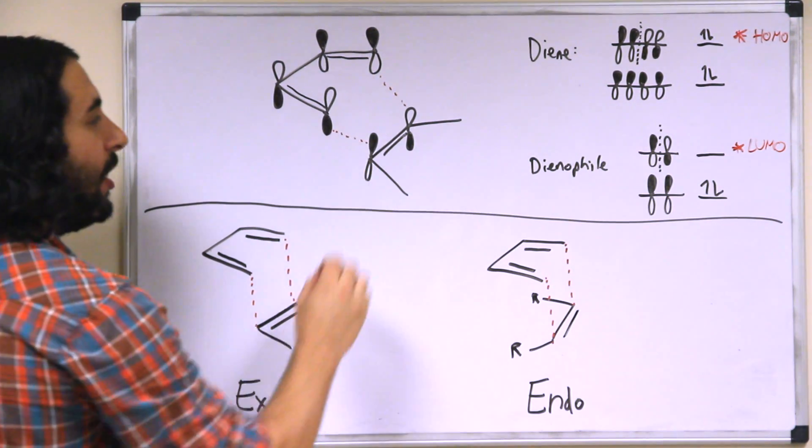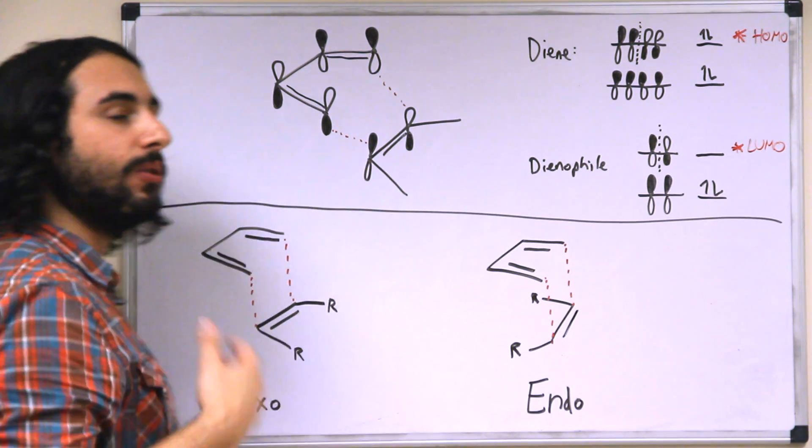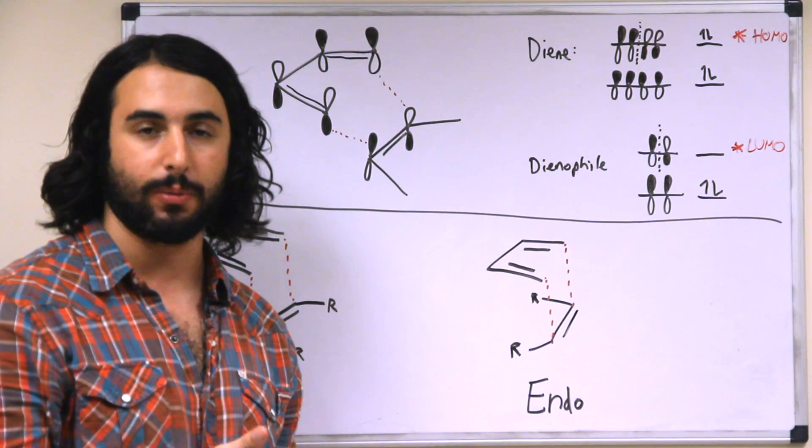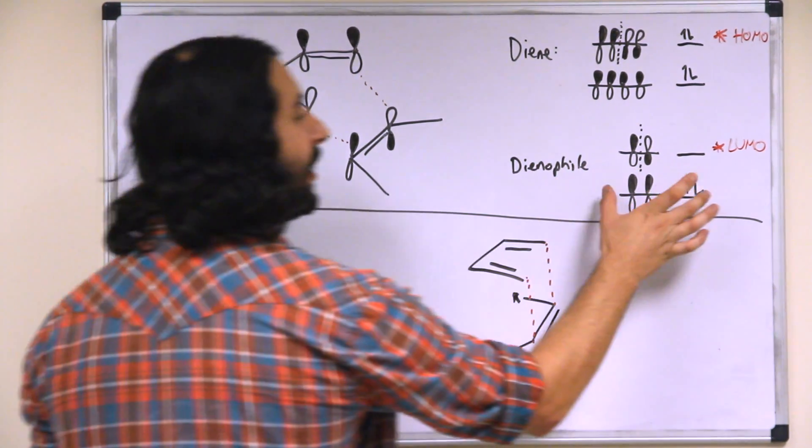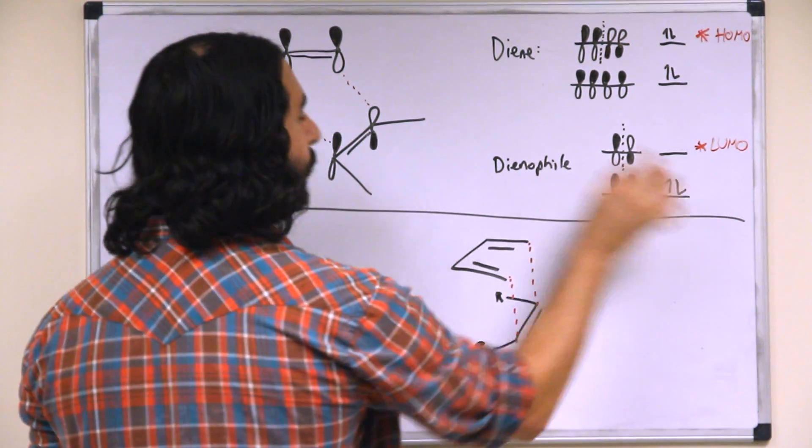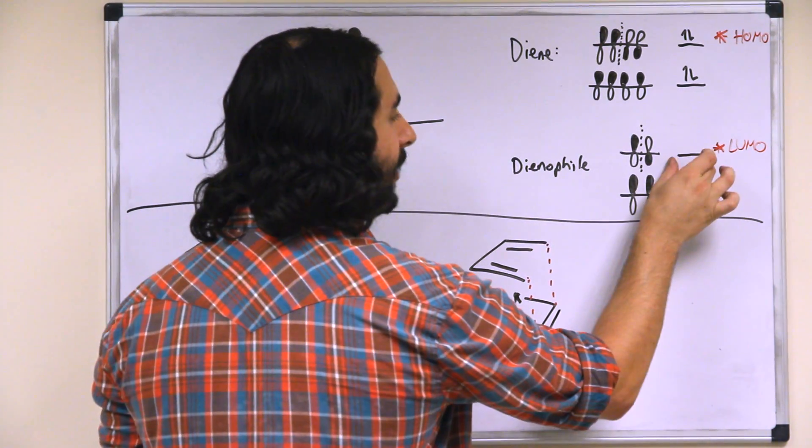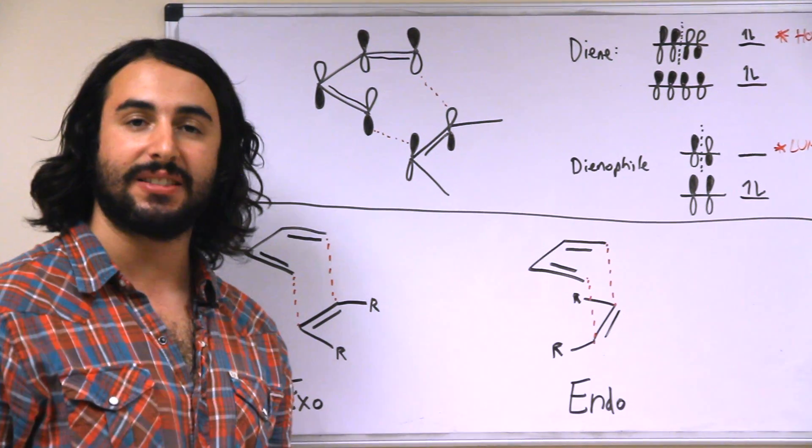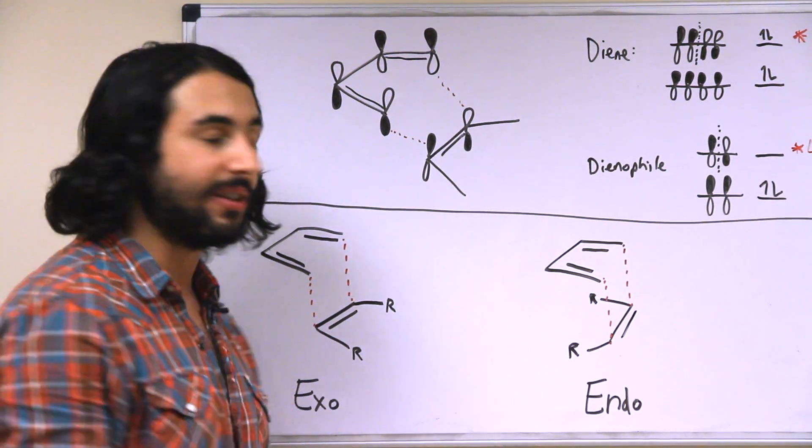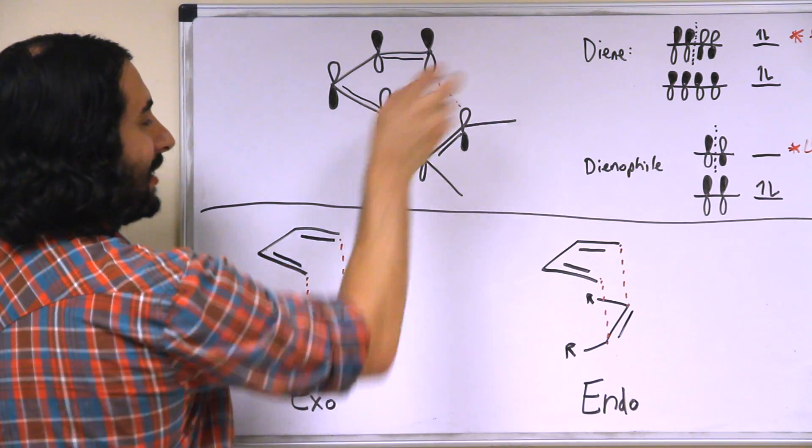And then the dienophile, electron density is being dumped into those. So we need to examine the lowest unoccupied molecular orbital that the electron density is going to go into. So over here we have one orbital full with the two pi electrons. And then the lowest unoccupied one is this one with one node. And so we can see here that everything is in phase and ready to undergo the Diels-Alder reaction. These are going to overlap nicely and these are going to overlap nicely.